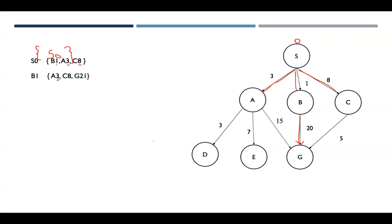Expanding B1, we keep A3 and C8 as they are, and add G21 as the adjacent node of B. Among 3, 8, and 21, the lowest cost is 3, so we expand A next. The adjacent nodes of A are D, E, and G. Their cumulative costs from start are: D = 3+3 = 6, E = 3+7 = 10, and G = 3+15 = 18.